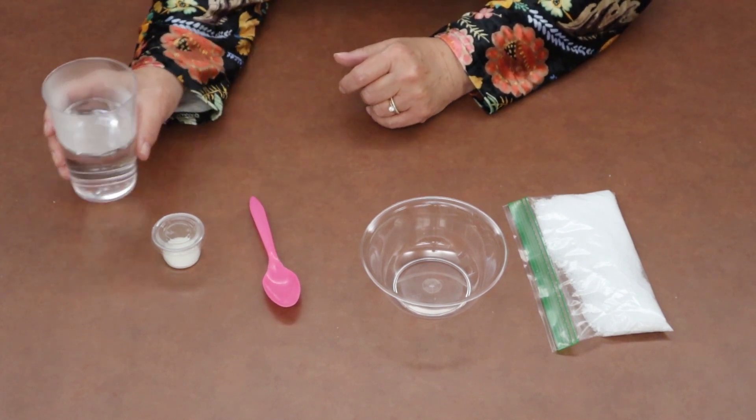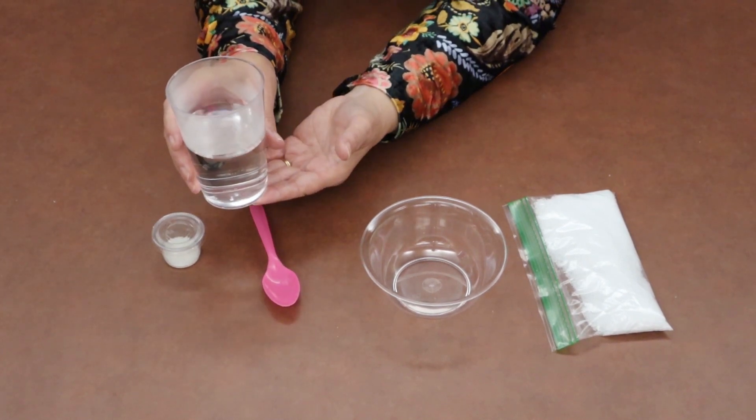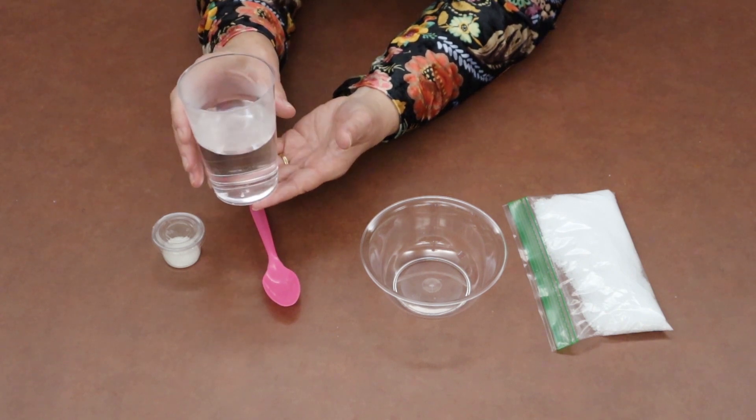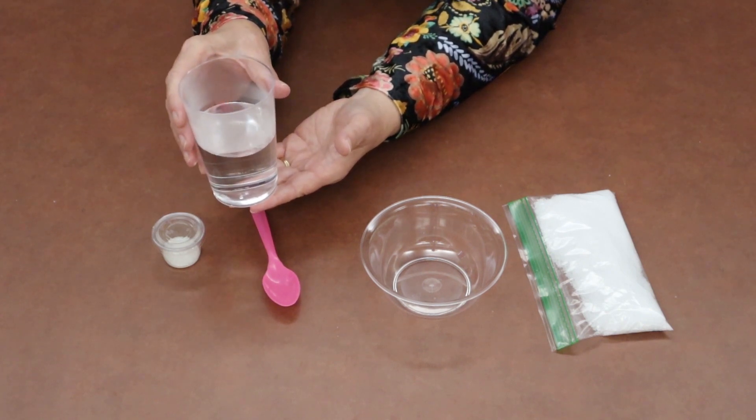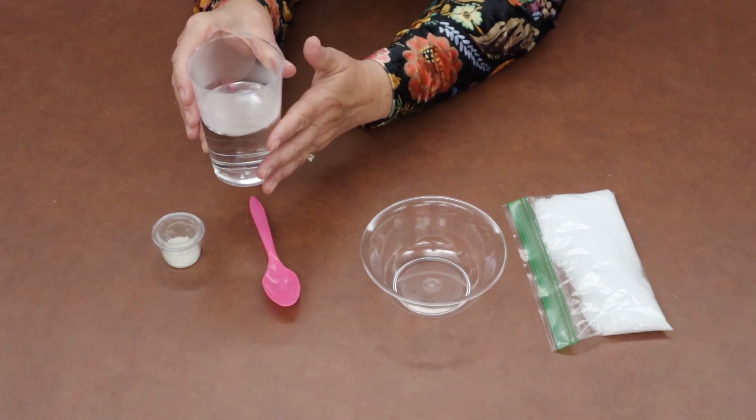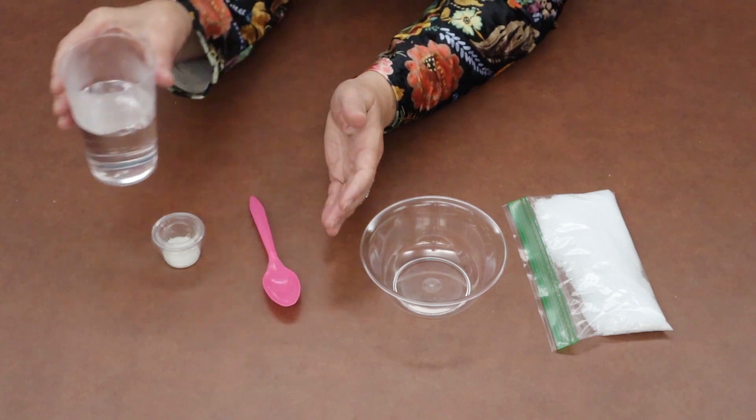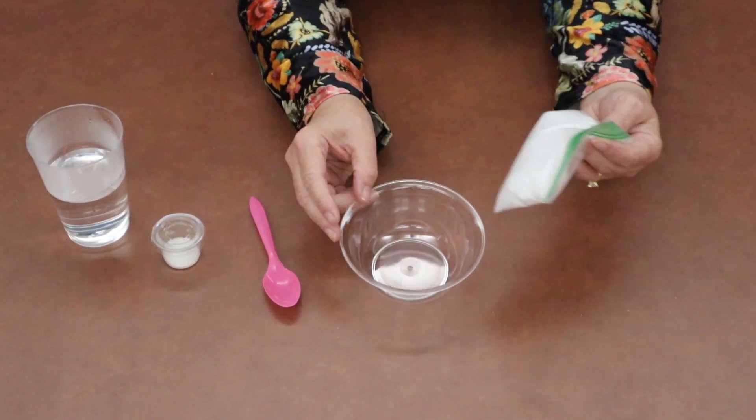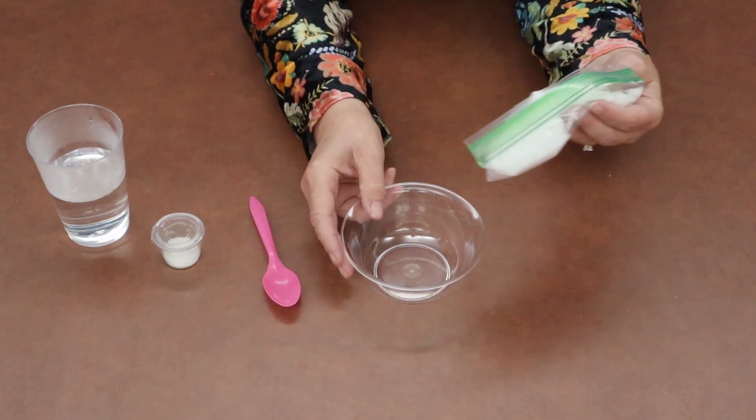The only other thing that you will need from your house is some hot water out of your faucet. You'll want to have mom or dad or an older sibling help you get the hot water. You don't want to burn yourself, but you do want the water to be pretty warm.